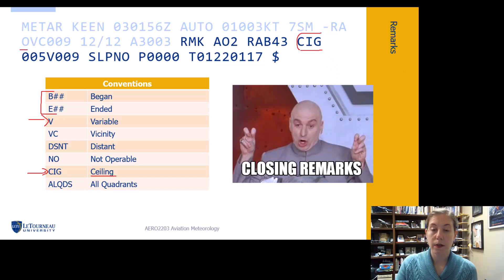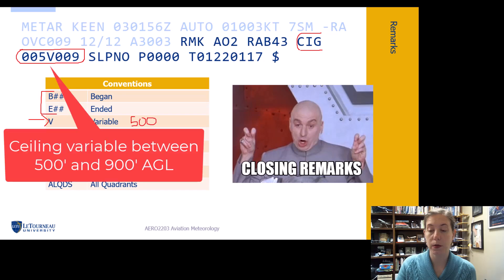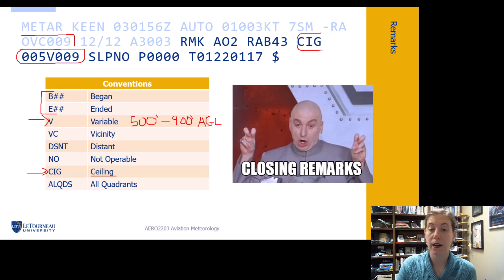And then we have 005V009, so that's variable. In this METAR, we have a ceiling that is variable between 500 to 900 feet AGL. That's important information because I know this is reporting in the main body it's overcast 900 feet, but apparently in some areas the ceiling is lower, as low as 500 feet. I'm going to take that into account. I realize now the bottoms of these clouds are not just nice and flat, they're a little bit more ragged.